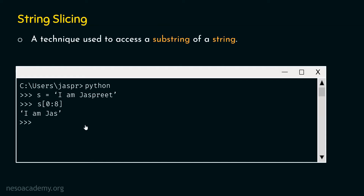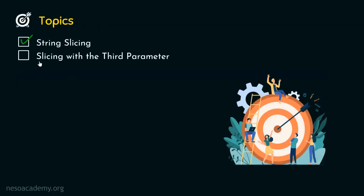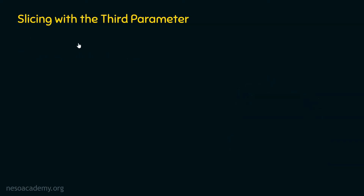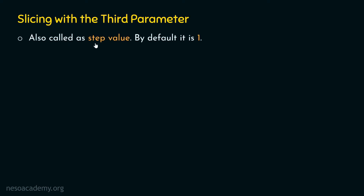This is all we need to understand about string slicing. Let's move on to the next topic, which is slicing with the third parameter. We can pass two parameters to slicing: the first parameter indicates the first index of the string that we want to access, and the second parameter specifies the last index plus 1. We can also provide a third parameter, which is called the step value. By default, it is equal to 1, so if we don't specify the step value, it will take the value 1.